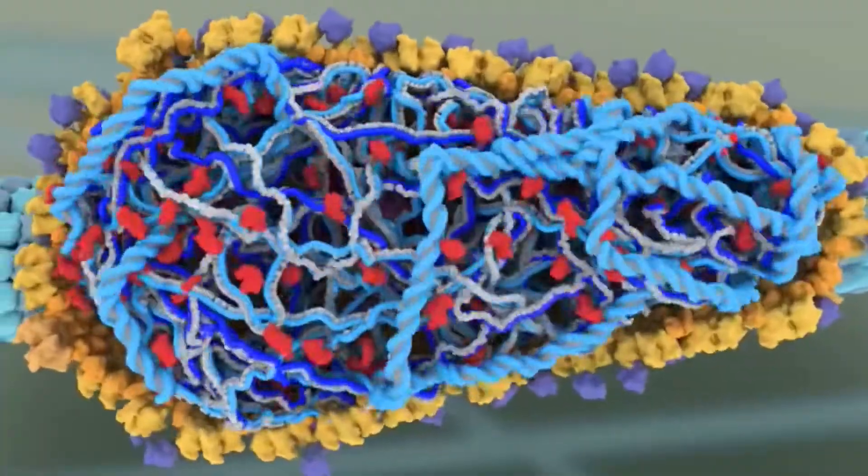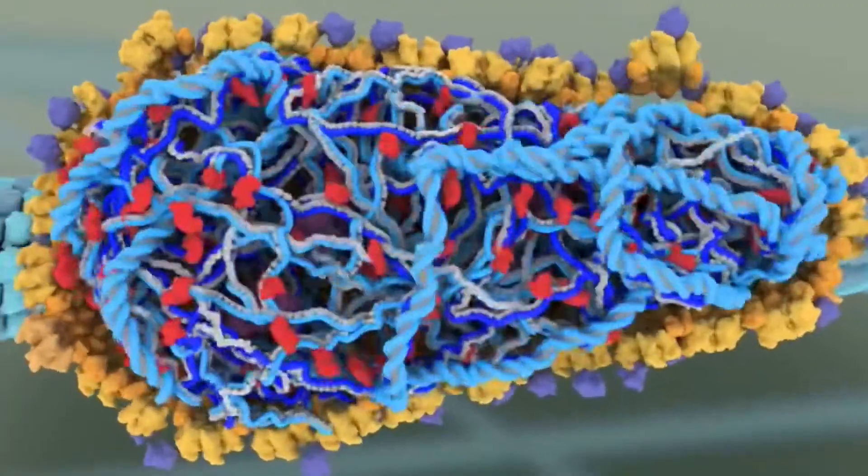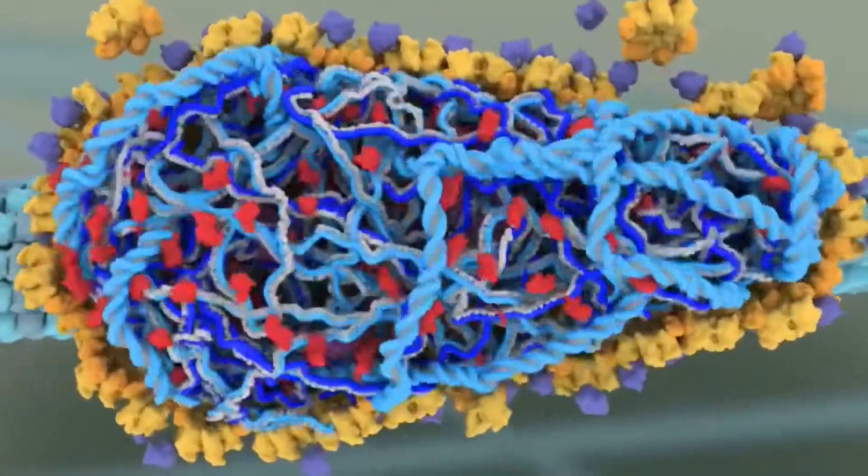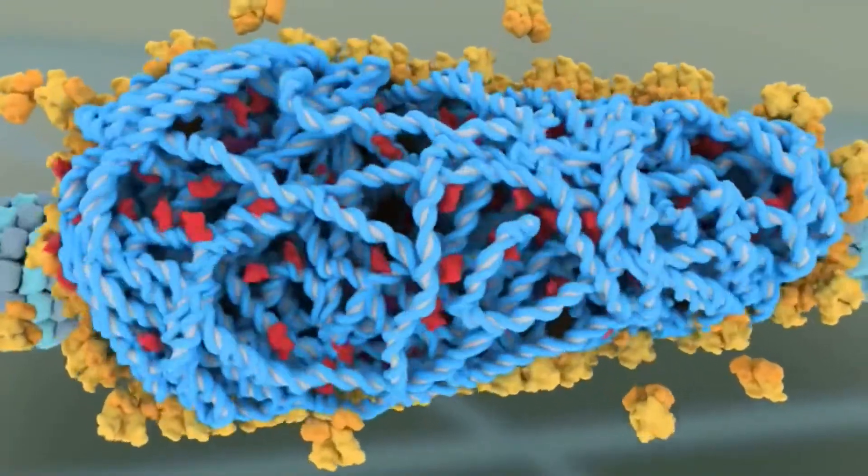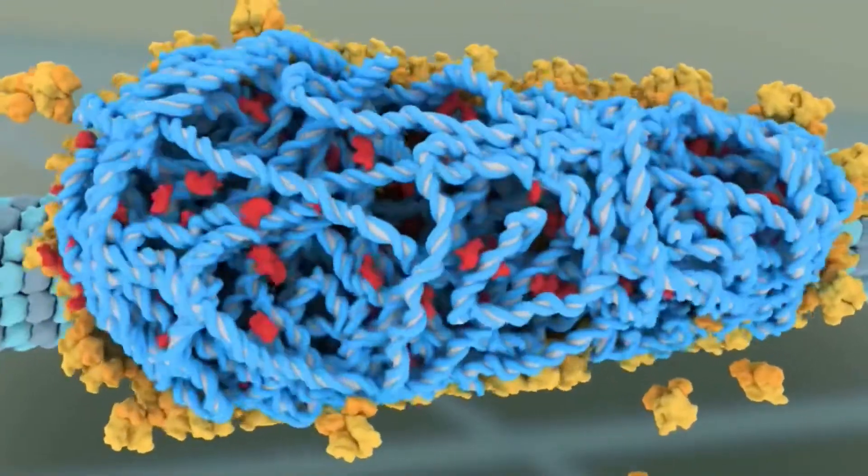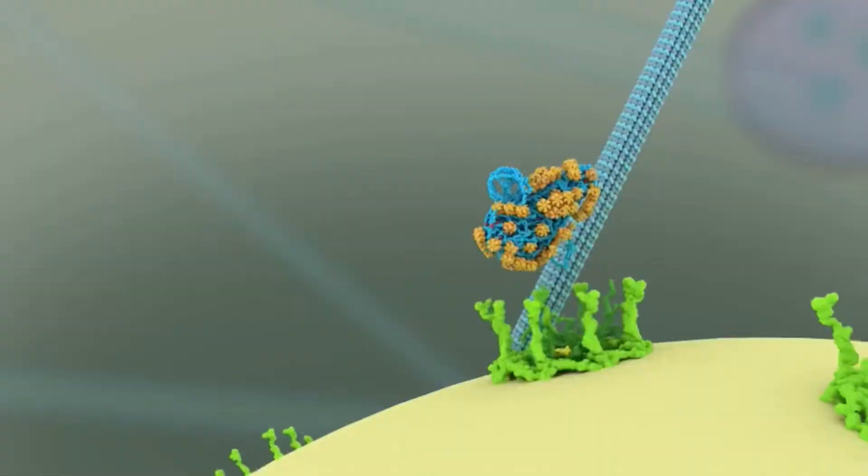As it goes, it degrades the single-stranded RNA. Multiple RTs work simultaneously to carry out this task, resulting in a complete, double-stranded DNA copy of the viral genome. And meanwhile, the capsid shell begins to break apart.